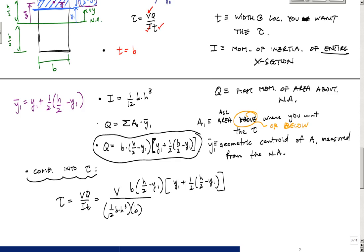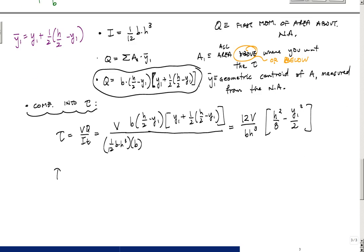If I do some algebra and make this into a little bit cleaner, what this will eventually become is 12V over bh cubed times h squared over 8 minus y1 squared over 2. Then if I factor out a half, then I get that this tau is equal to 6V over bh cubed times h squared over 4 minus y1 squared.